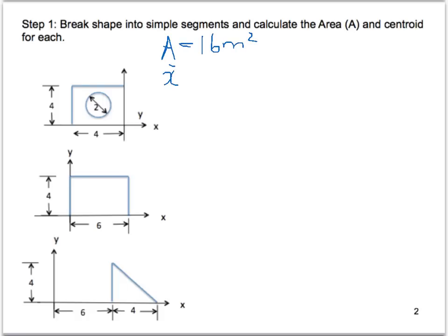Our X bar is just this distance, so that would be negative 2m as we're going to the left hand side of the X axis. And our Y bar would be to the centre of the square here, which is also 2m.